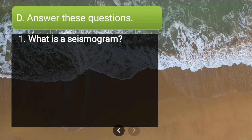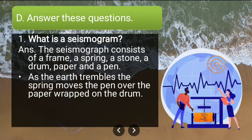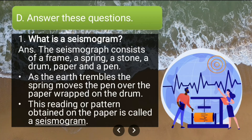Long answer: what is a seismogram? The seismograph consists of a frame, a spring, a stone, a drum, paper and a pen. As the earth trembles, the spring moves the pen over the paper wrapped on the drum. The reading or pattern obtained on the paper is called a seismogram.